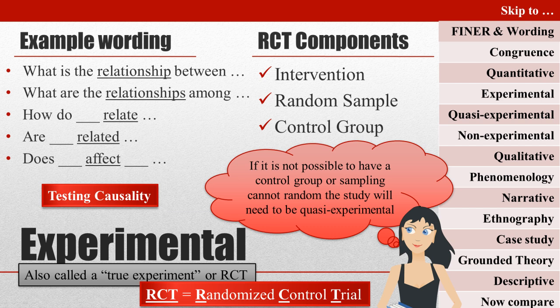Randomized controlled trials have optimal control because participants are randomized, there is a control group, and the researcher administers the intervention. When critiquing a study about causal relationships among variables, you can almost always say that the best design was not used if it was not a randomized controlled trial. The exception would be if an intervention was not ethical.